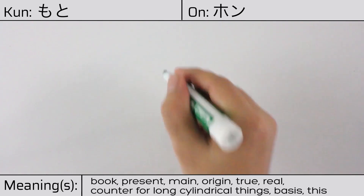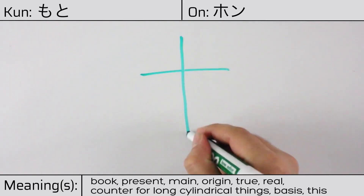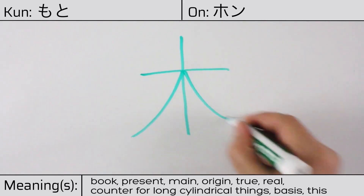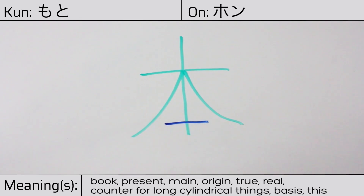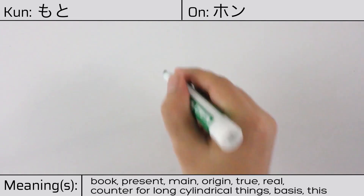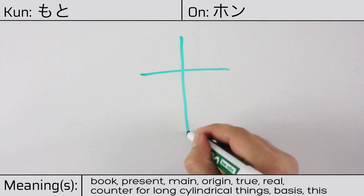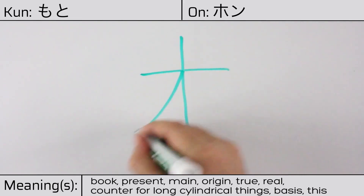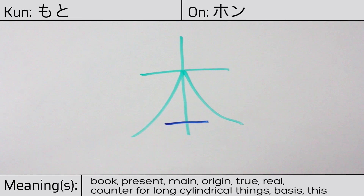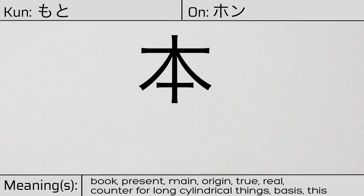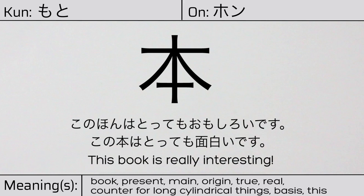This character is made up of the following radicals or parts: the kanji character meaning tree, followed by the kanji character ichi or one. You can remember this kanji by thinking of it as a tree which has been cut down in order to make books. Our example sentence is: この本はとっても面白いです — This book is really interesting.